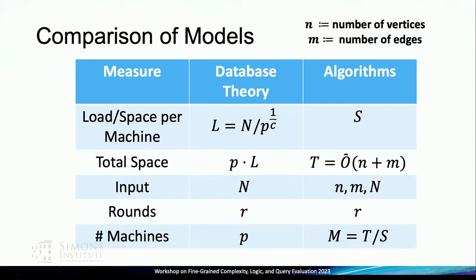The number of machines is somewhat data-dependent. If the space per machine is a constant, nothing would prevent you from sending all the data to one machine and solving it in zero time. So the number of machines depends on the size of the data — potentially n to some exponent greater than one if S is sublinear in n. We do consider S to be sublinear in n for some regimes, and I'll specifically talk about those.